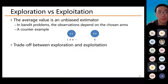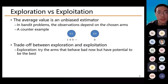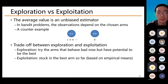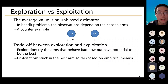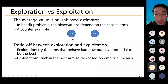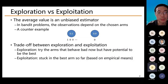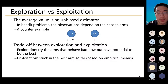Because of this, in bandit problems there is a trade-off between exploration and exploitation. Exploration means you try arms that behave badly now but have potential to be the best, while exploitation means sticking with the best arm so far based on empirical means. Too much exploitation will lose long-term rewards by missing the real optimal arm. Too much exploration will lose short-term rewards because most arms you explore are not as good as the current best — there is only a small probability for an arm to be the best one.